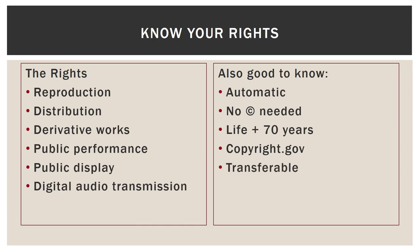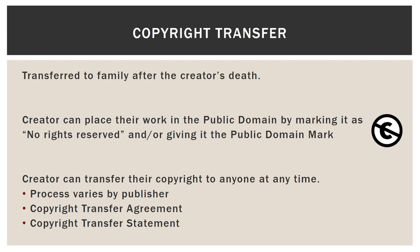Copyright is also transferable, and this is where publishers come in. Copyright is usually automatically transferred to a surviving family member after the creator's death. However, the creator can do whatever they want with their copyright. At any point they can place their work in the public domain — either marking it with the public domain mark, which is the C in a circle with a line through it, or marking it as no rights reserved, thereby giving everyone access to it. The creator can also transfer their copyright to someone — usually a publisher — and this happens when you're going through the publishing process. You will have to sign something called a copyright transfer agreement, and the process will vary a little by publisher, but that part won't. You will need to sign something.